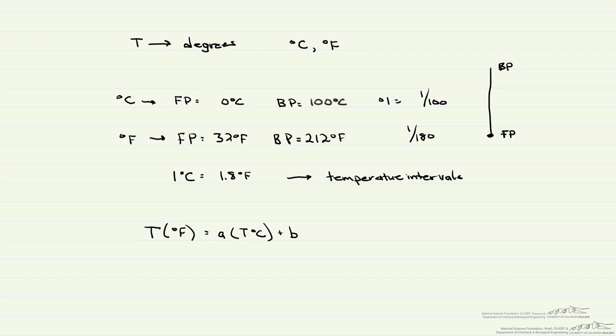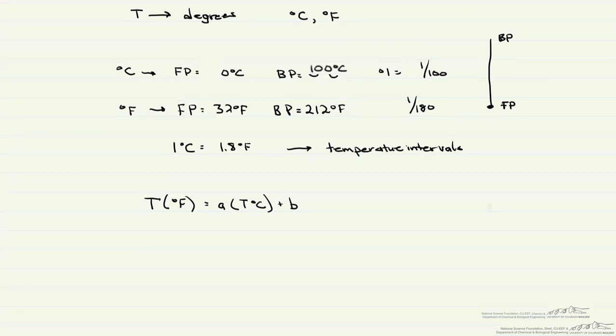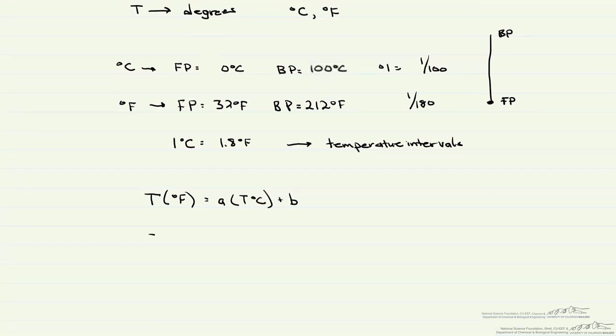We're going to need two conditions because we have two unknowns, A and B. And what are those conditions? The boiling point and the freezing point. If we start here with the freezing point, we know that 32 degrees Fahrenheit is equal to this A and now this is zero degrees Celsius plus our B. Now let's do it for the boiling point. 212 degrees Fahrenheit is equal to A, and in Celsius, the boiling point is 100 degrees C plus B.